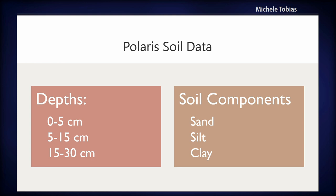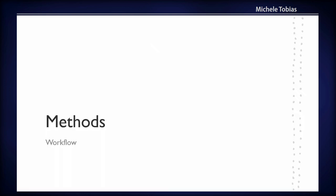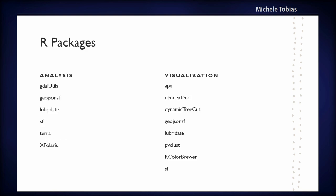Because soil data is also really important when defining an AVA, I have soil data from the Polaris dataset — another open dataset for soils. I have data at three different depths, focusing on just the top part of the soil column because that's where the majority of roots are for wine grapes. For each of those three depths I have three soil components: sand, silt, and clay.